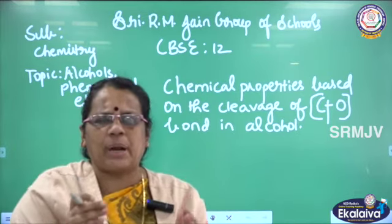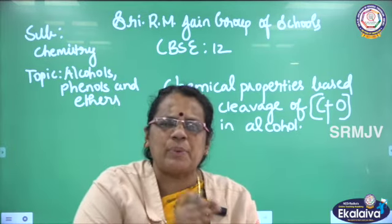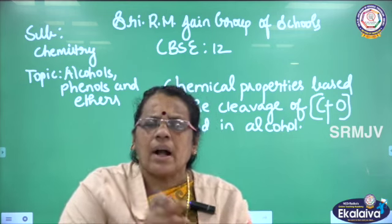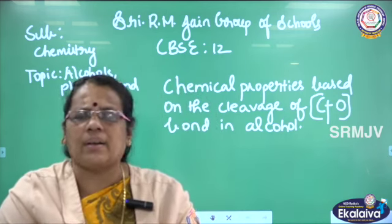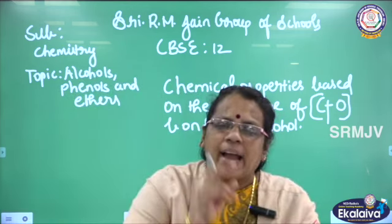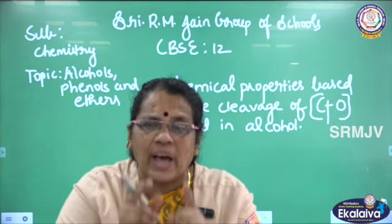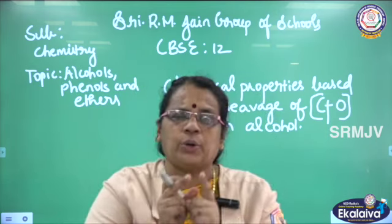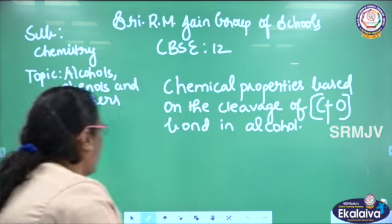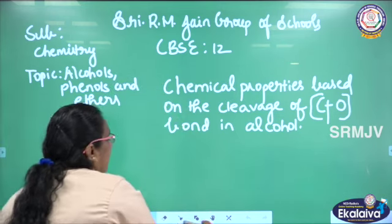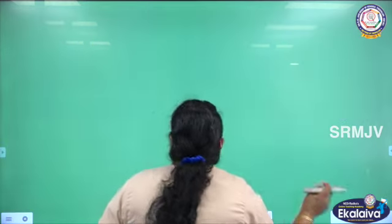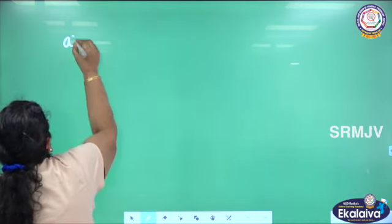Shree Gurubhya Namah children, welcome to online training initiative Ekalavya. We are going to discuss today about the chemical properties of alcohol, which is based on the cleavage of carbon and oxygen bond in alcohol. In the last video, I told about the chemical properties based on the cleavage of OH bond. Today, we are going to see other properties where we cleave the bond between carbon and oxygen in alcohol. Are you ready children? We are going to see one by one the different properties.